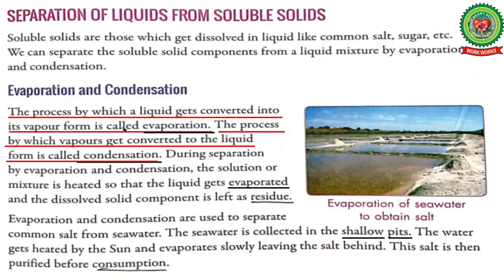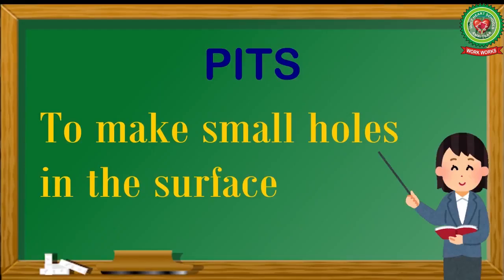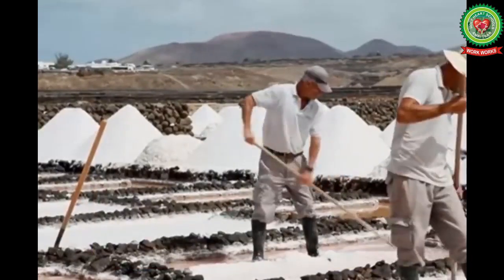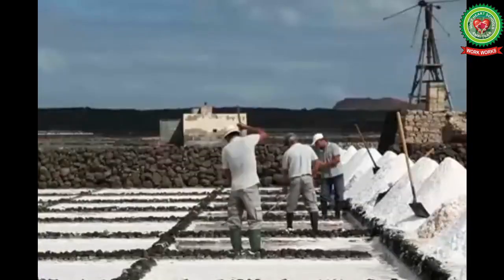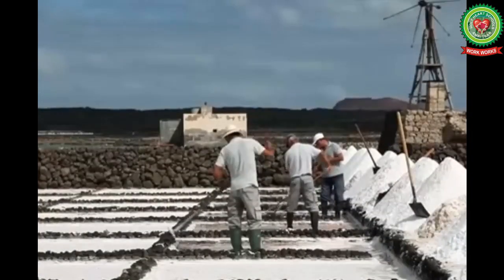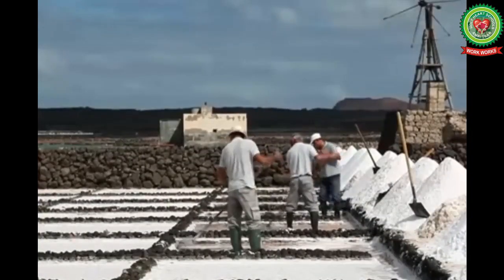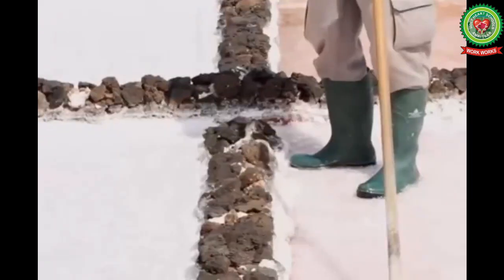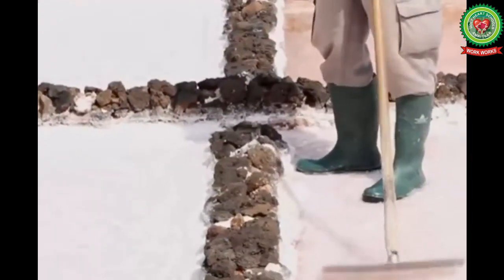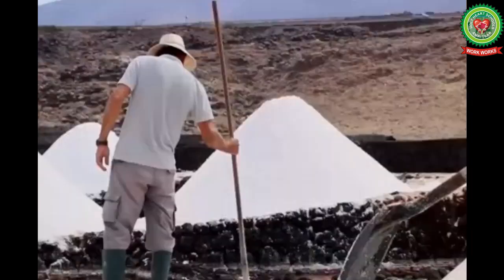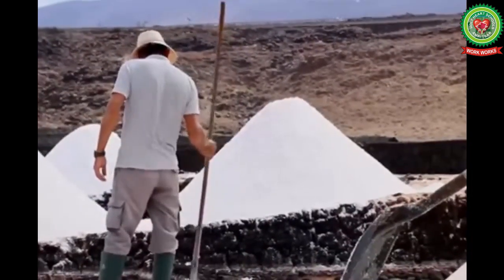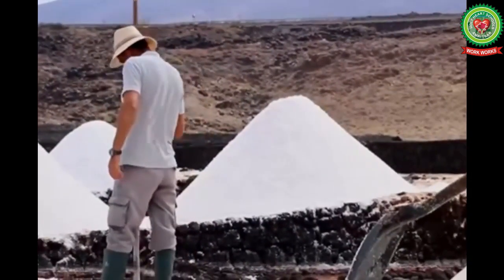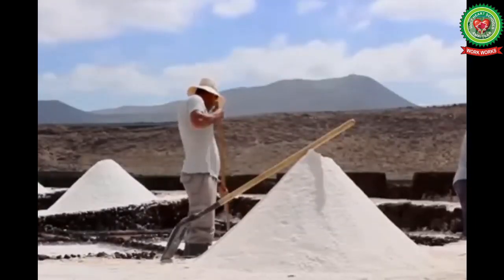The sea water is collected in shallow pits. Underline the word 'shallow' and write its meaning: not deep. Underline the word 'pits' and write its meaning: small holes in the surface. To separate salt from sea water, the sea water is collected in shallow pits and the water gets heated by the sun and evaporates.